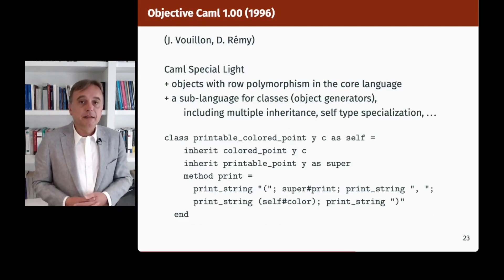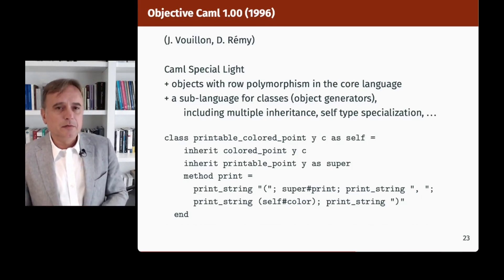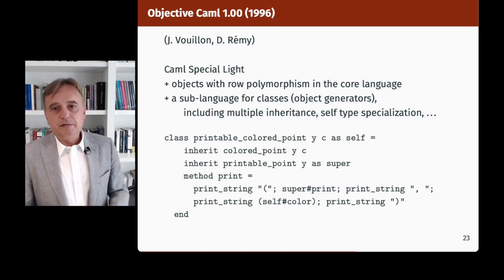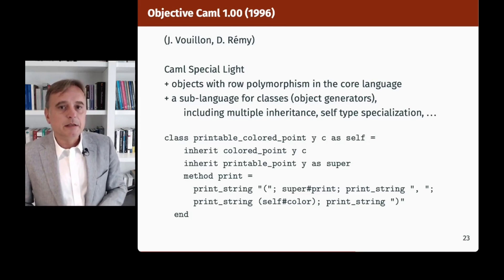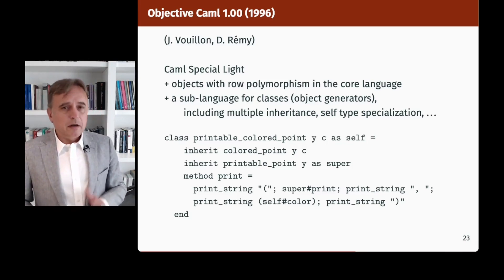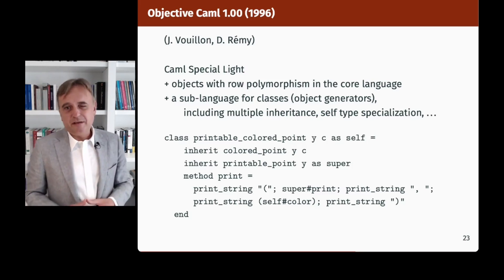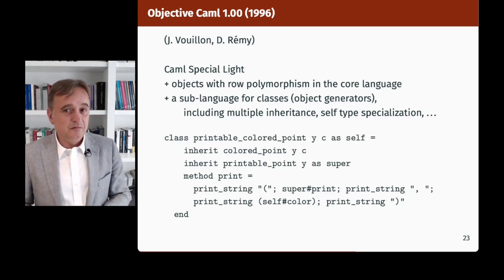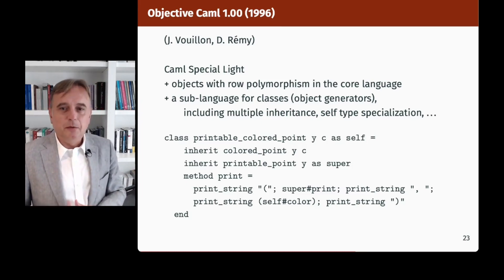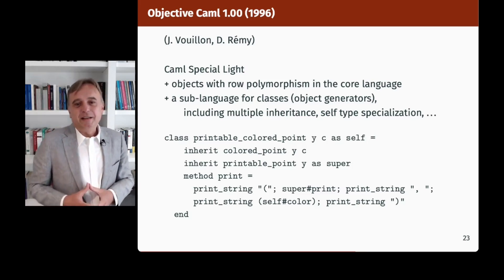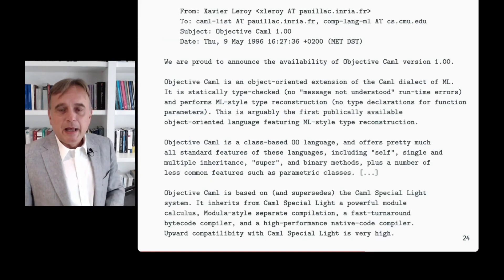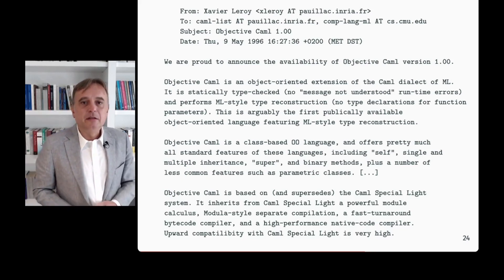That was the basis for Objective Caml 1.00, designed by Vouillon and Rémy and implemented by Vouillon, taking Caml Special Light and adding objects with row polymorphism in the core language, plus a sub-language for classes — classes being viewed as object generators — that supported multiple inheritance, self-type specialization, binary methods, and pretty much everything fitting quite naturally. At the bottom of the slide you can see how to define printable color points by inheriting from colored points and printable points, with self-references and super-references. That was announced in May 1996.